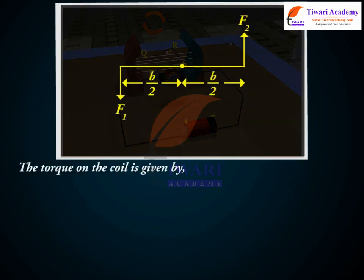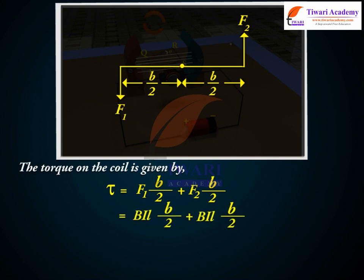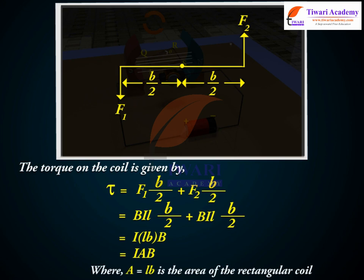The torque on the coil is given by tau equals F1 times B upon 2 plus F2 times B upon 2, equals BIL times B upon 2 plus BIL times B upon 2, equals I times LB times B, equals IAB, where A equals LB is the area of the rectangular coil.